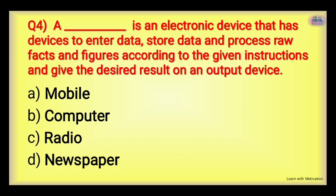Next: Dash is an electronic device that has devices to enter data, store data, process raw facts and figures according to given instructions, and give desired results on an output device. It has many associated devices that help in entering, storing, and processing data. Options: Mobile, Computer, Radio, or Newspaper. The right answer is Computer — this is also the definition of Computer.